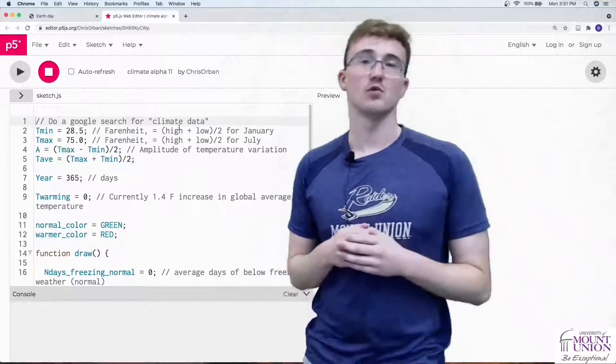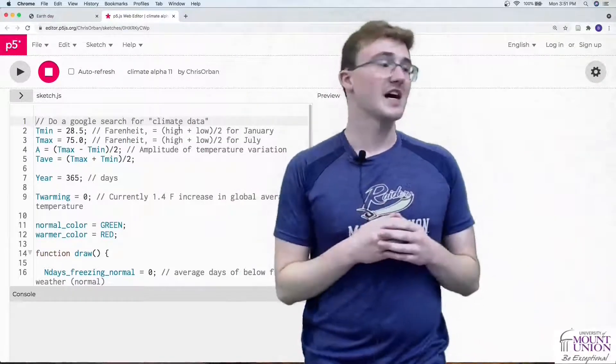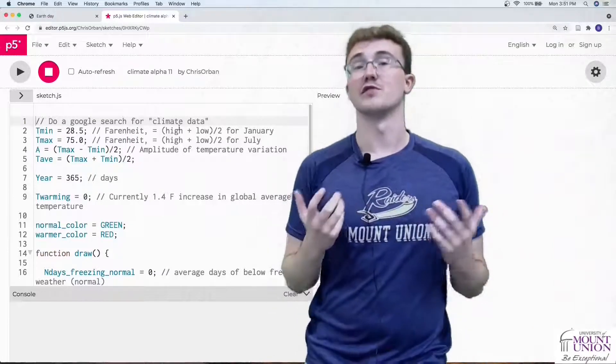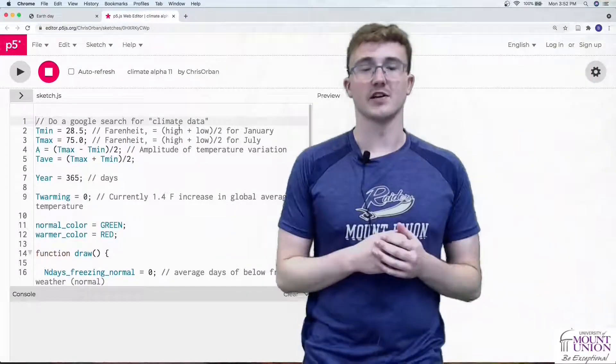T_min will be 28 degrees from January, and T_max will be 74.5 degrees Fahrenheit from July. You can plug in whatever numbers you calculated.